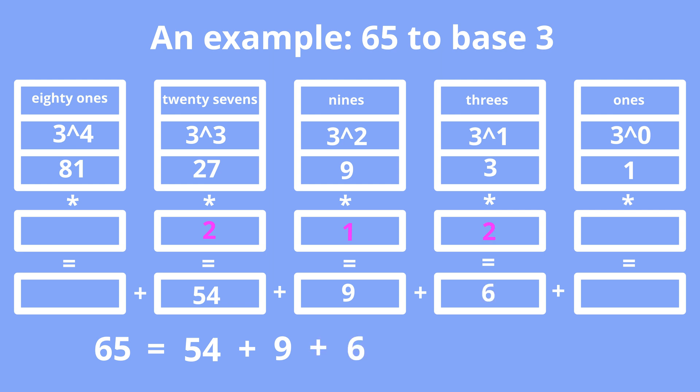Let's try to put digit 2 in the 3s position. 3 times 2 equals 6. 54 plus 9 plus 6 equals 69, which is greater than 65. So let's decrease by 1 digit in the 3s position down to 1. 54 plus 9 plus 3 equals 66, which is greater than 65. So let's decrease by 1 digit in the 3s position down to 0.